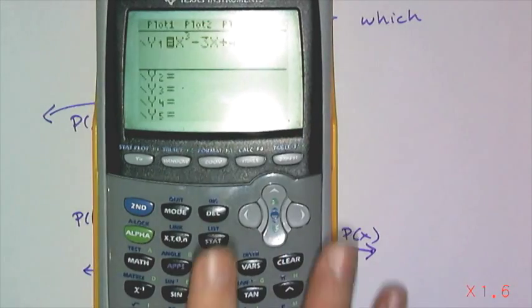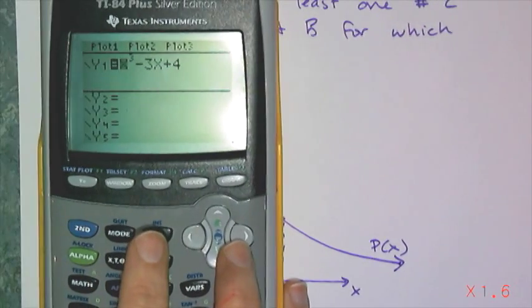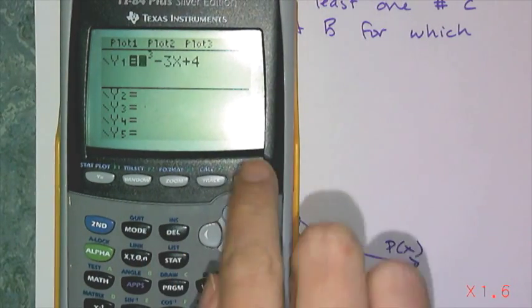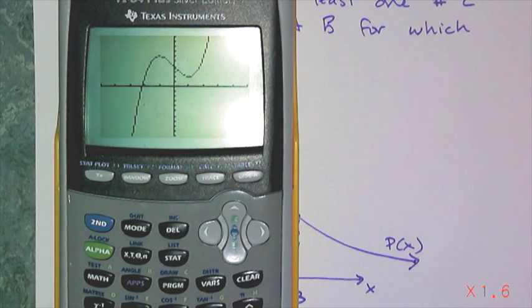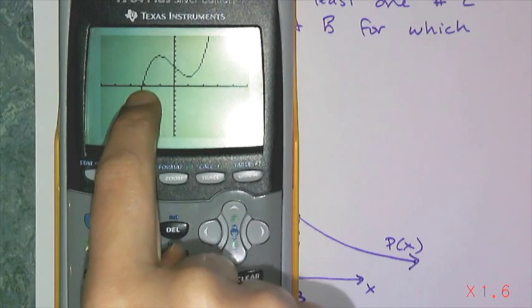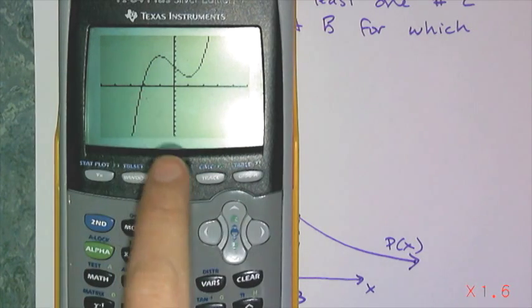If we look at this example on our graphing calculator, I have the function y equals x cubed minus 3x plus 4. And if I graph it, I get this. And I know it's not hitting at a point. It's hitting really close to negative 2, but it's not actually hitting at negative 2.